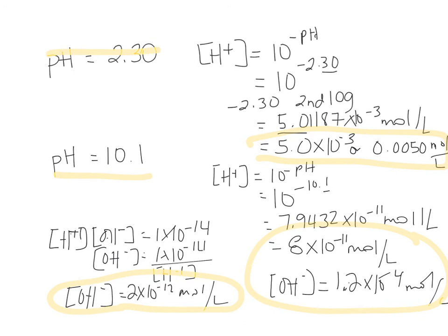When determining pH, H⁺, pOH, and OH⁻, remember to use the proper, unique set of sig fig rules. And there are different ways to figure out your hydroxide ion concentration if you know a pH.